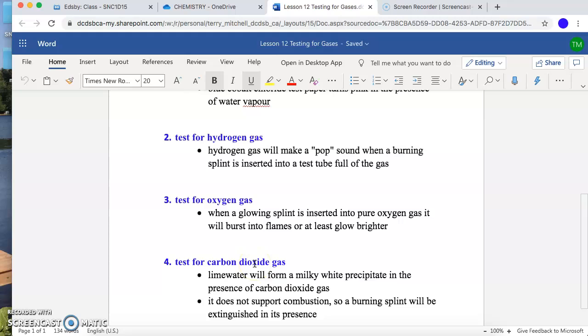And carbon dioxide. A couple different tests we do here. One is with the burning splint. If you put a burning splint in the presence of carbon dioxide, it should go out. The fire will go out. Carbon dioxide will extinguish it. The fire extinguishers in our classroom, those are carbon dioxide based. When you spray it on a fire, they smother the area with carbon dioxide and that fire can no longer survive. It doesn't have oxygen. So it goes out.